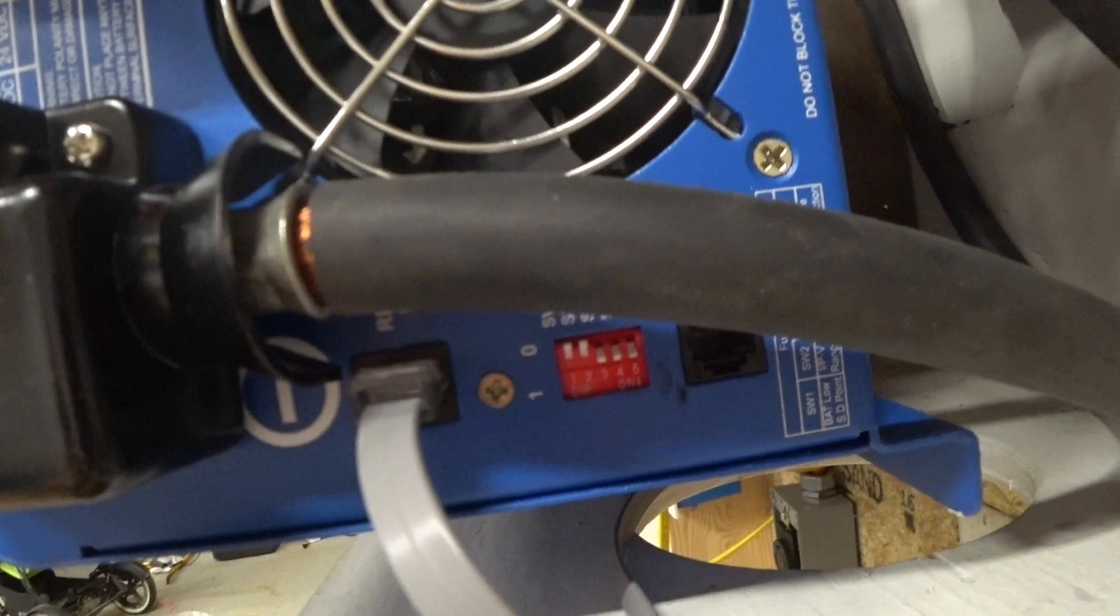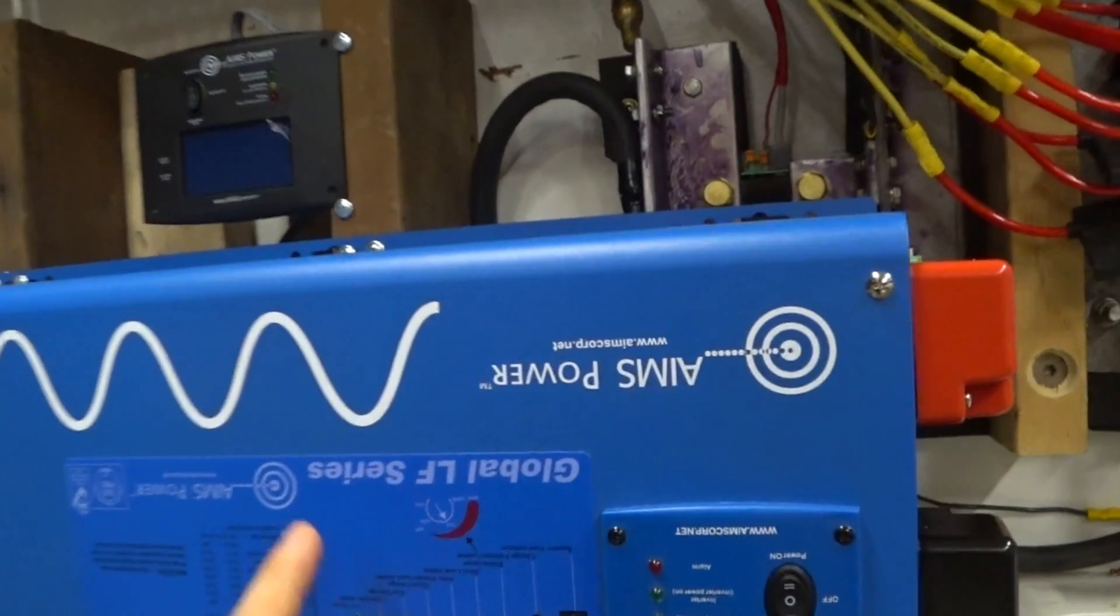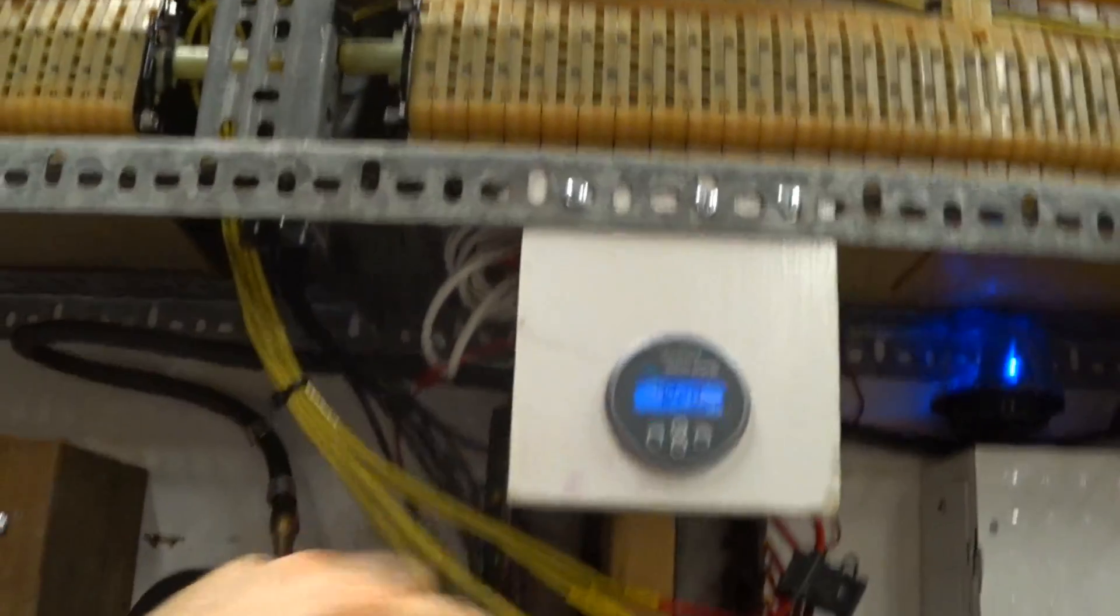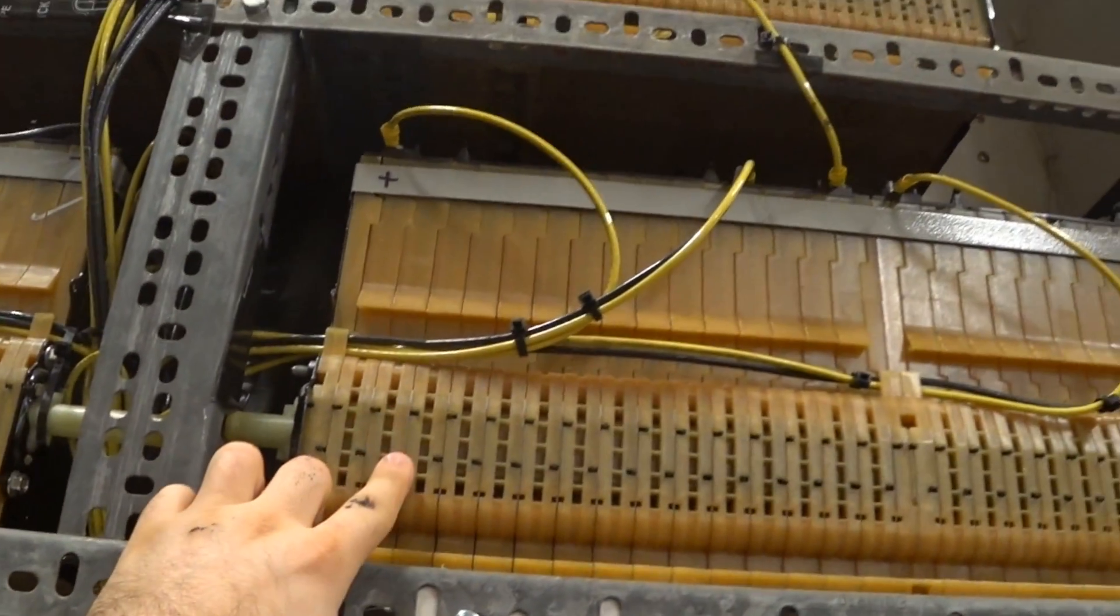There is a setting that I can change on these dip switches back here to allow for this to go all the way down to 40 volts, which would be about 3.3 volts per cell. And right now, by dying at 42 volts, each cell is at 3.5 volts.